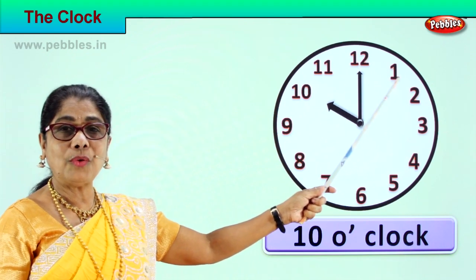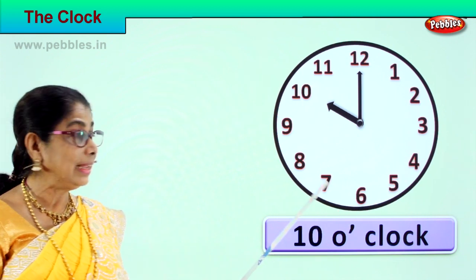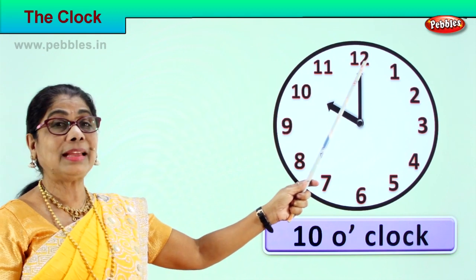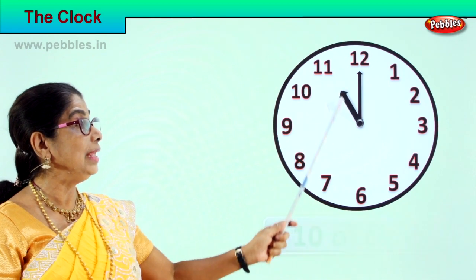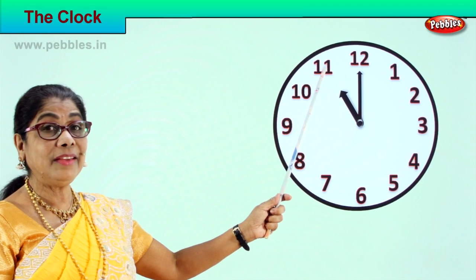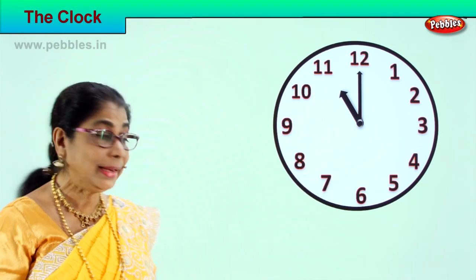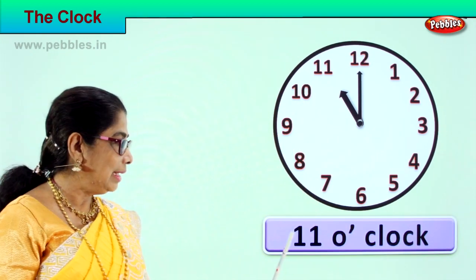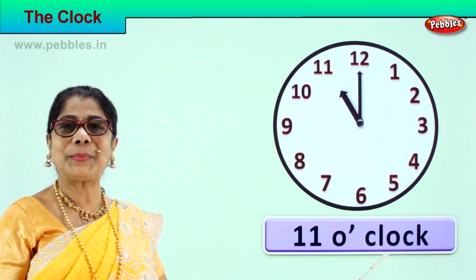Now the minute hand goes from one, all the way to eleven, and comes back to twelve. The hour hand from ten shifts to eleven. The hour hand is on eleven and the minute hand is on twelve. How do we read this time? We read it as eleven o'clock. How do you read? Eleven o'clock. Good.